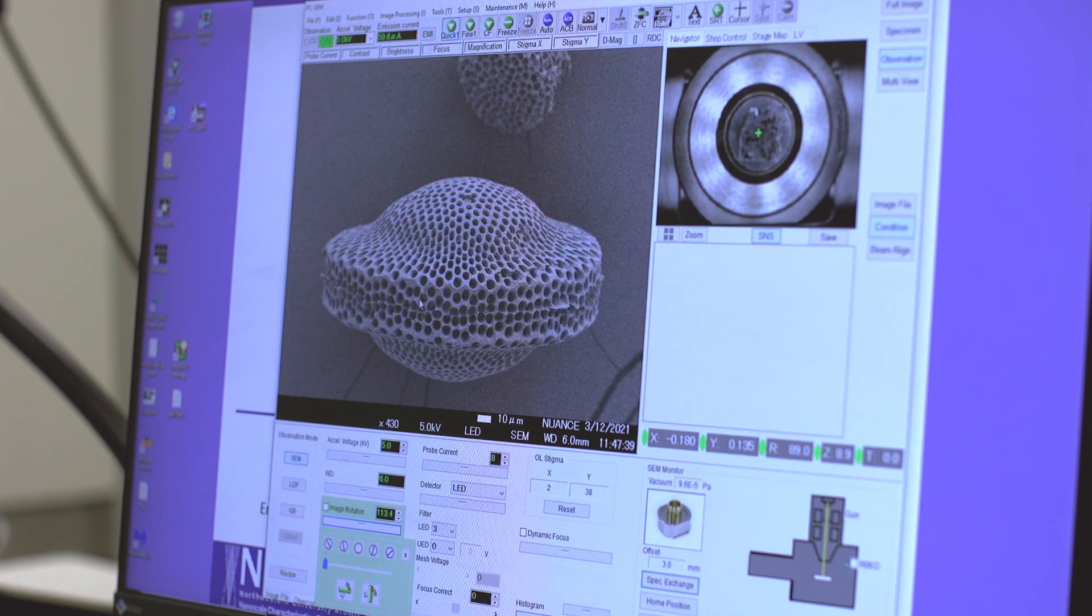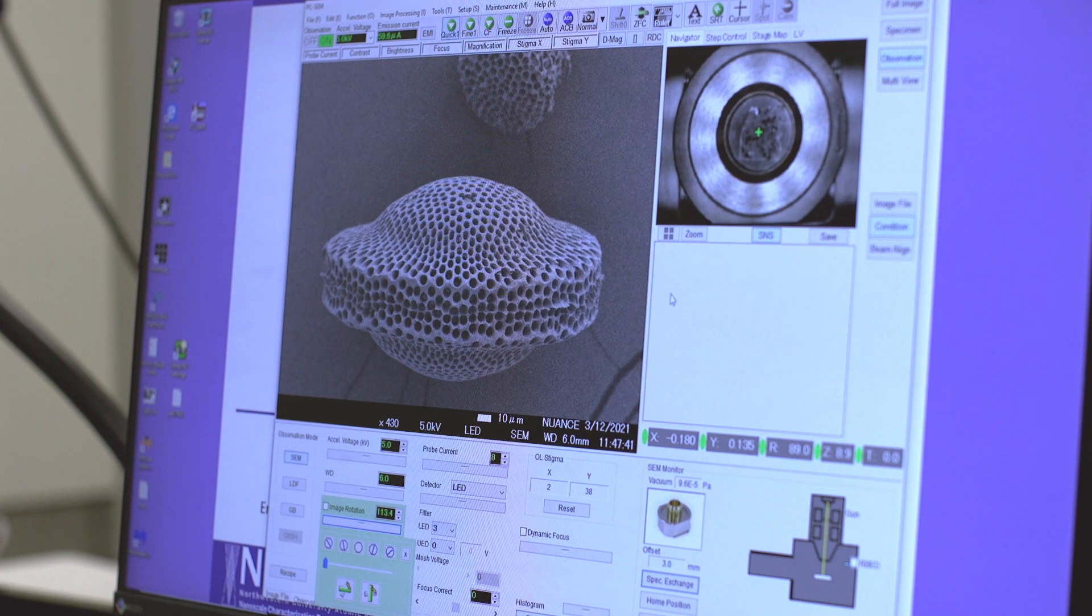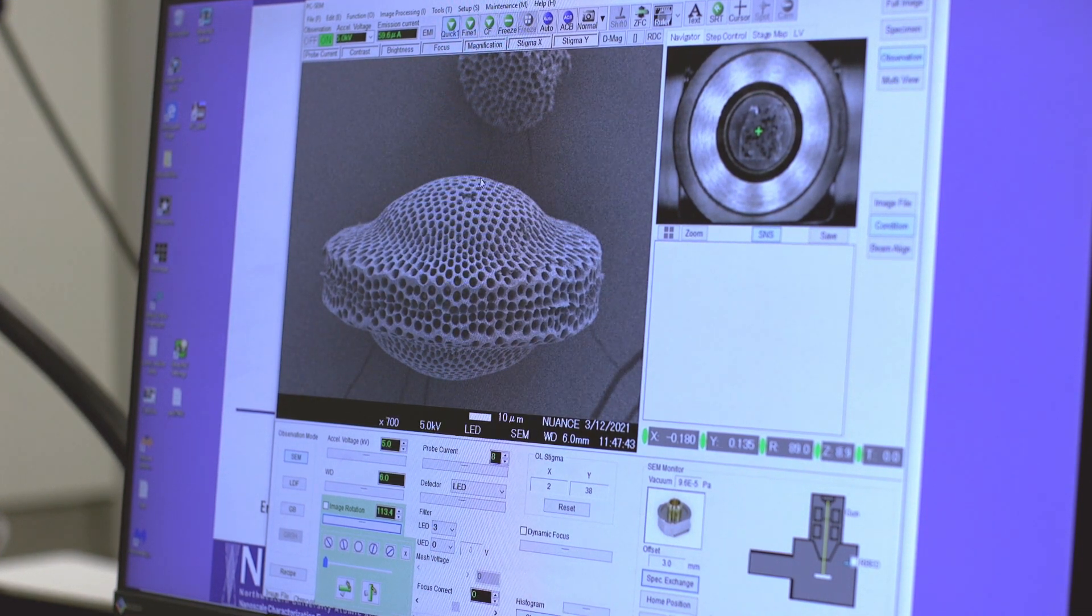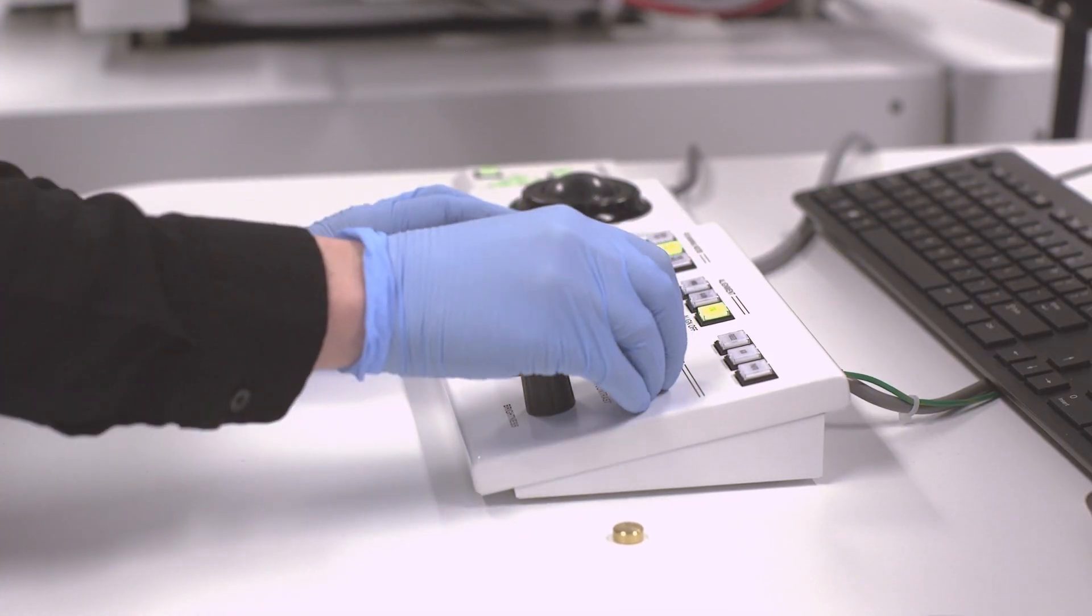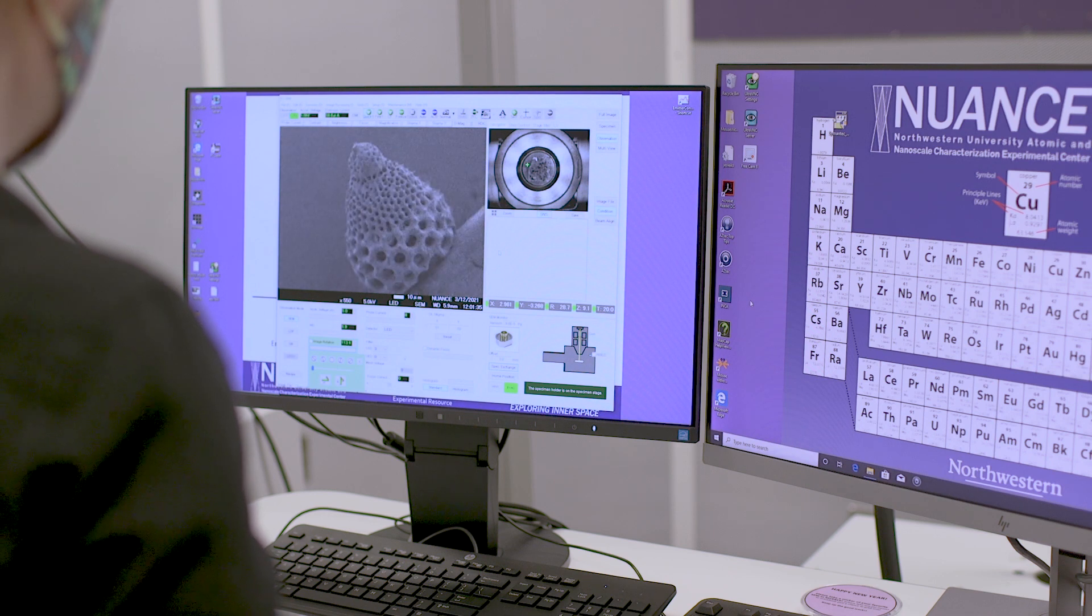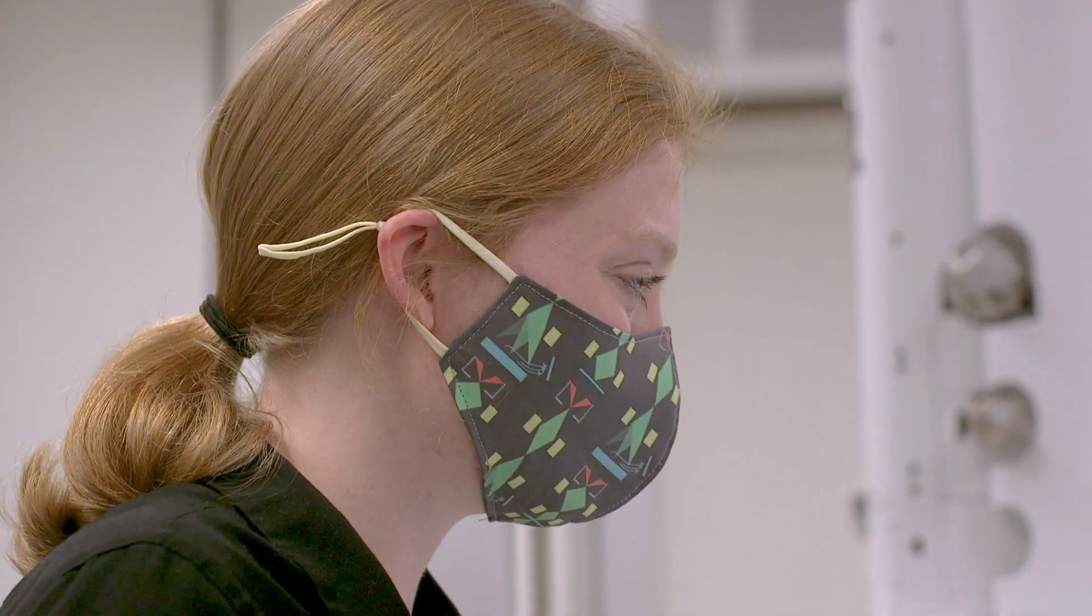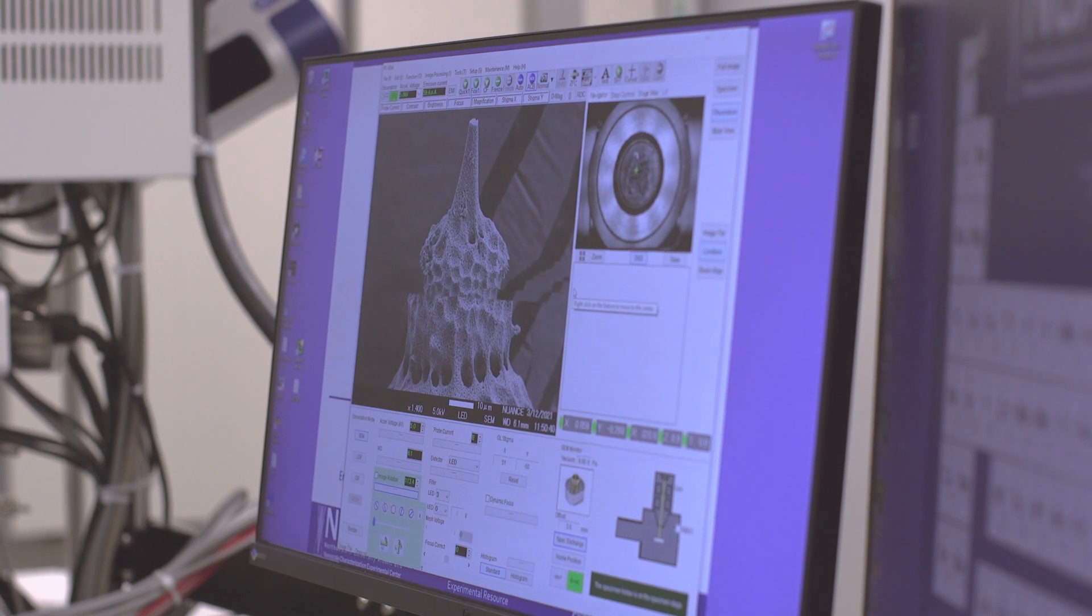This particular radiolarian looks like a UFO. If that's what a UFO looks like. They actually all are kind of weird shaped, which makes them so much fun to image. But this one in particular is pretty cool. I don't know if I would wear this hat.